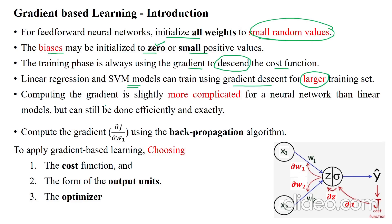Computing the gradient is slightly more complicated for a neural network than linear models like SVM or logistic regression, but the neural network can still reduce the cost value efficiently and exactly using optimization algorithms.